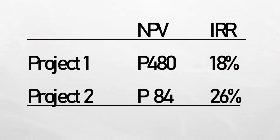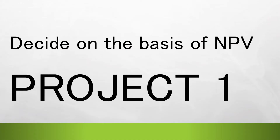To summarize: project 1 has an NPV of 480 and an IRR of 18%; project 2 has an NPV of 84 and an IRR of 26%. Project 1 has the higher NPV; project 2 has the higher IRR. Which project should we select? Since they are mutually exclusive, we know both are profitable — NPV is greater than zero and IRR is greater than the hurdle rate — but we must select the one with the higher net present value, which is project 1.